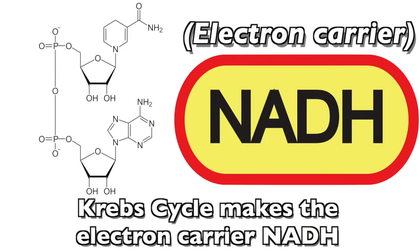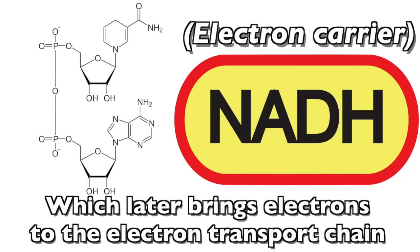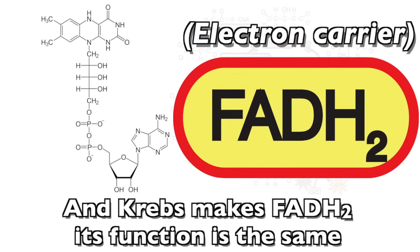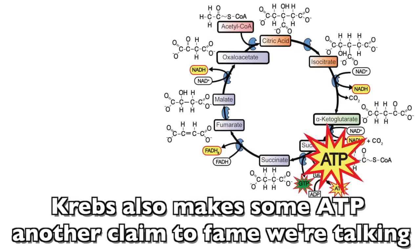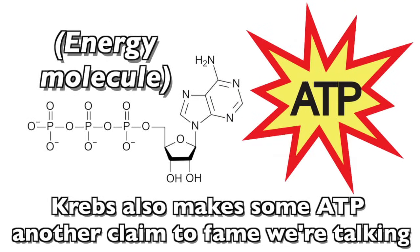Krebs cycle makes electron carrier NADH, which later brings electrons to the electron transport chain. And Krebs makes FADH2, its function is the same. Krebs also makes some ATP, another claim to fame.